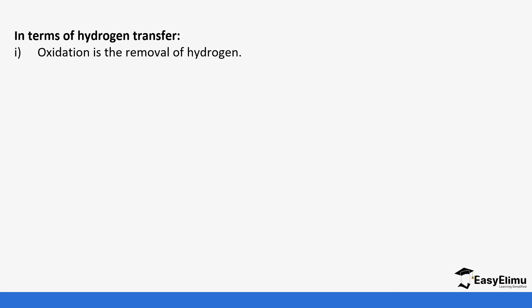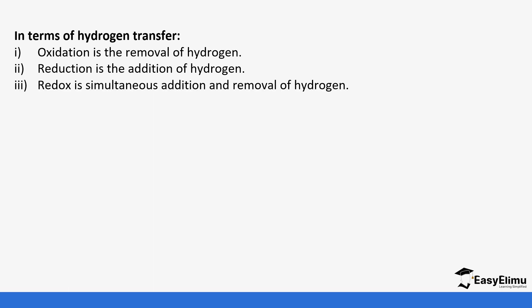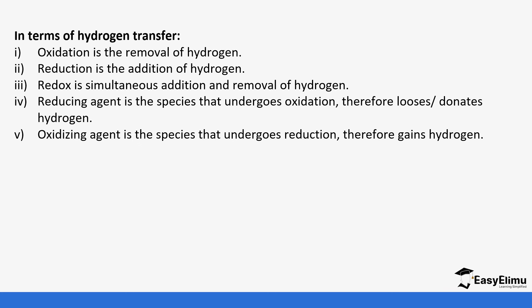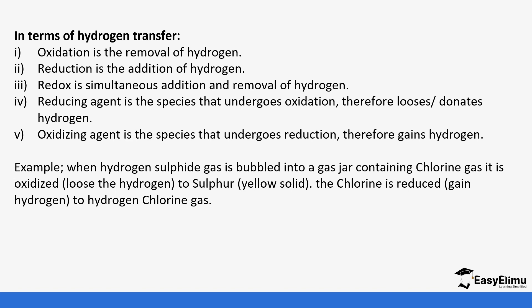In terms of hydrogen transfer — also from Form 1 — oxidation is the removal of hydrogen and reduction is the addition of hydrogen. In a redox reaction, there is a simultaneous addition and removal of hydrogen. The reducing agent undergoes oxidation, so it donates hydrogen — which is totally opposite to the loss and gain of oxygen. The oxidizing agent undergoes reduction and therefore gains hydrogen. For example, when hydrogen sulfide reacts with chlorine gas, chlorine loses hydrogen to sulfur, so chlorine is reduced to hydrogen chloride gas.